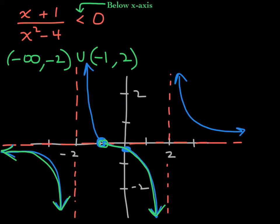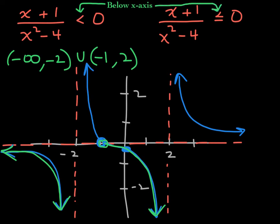Let's answer another question with regard to this graph. Now we have the same rational expression. When is it less than or equal to 0? This symbol still means when is it below the x-axis — it's the same question, except when we were solving polynomial inequalities, we would take this non-strict inequality and put brackets on the endpoints. That would be the only difference, and that's true here in this context as well.